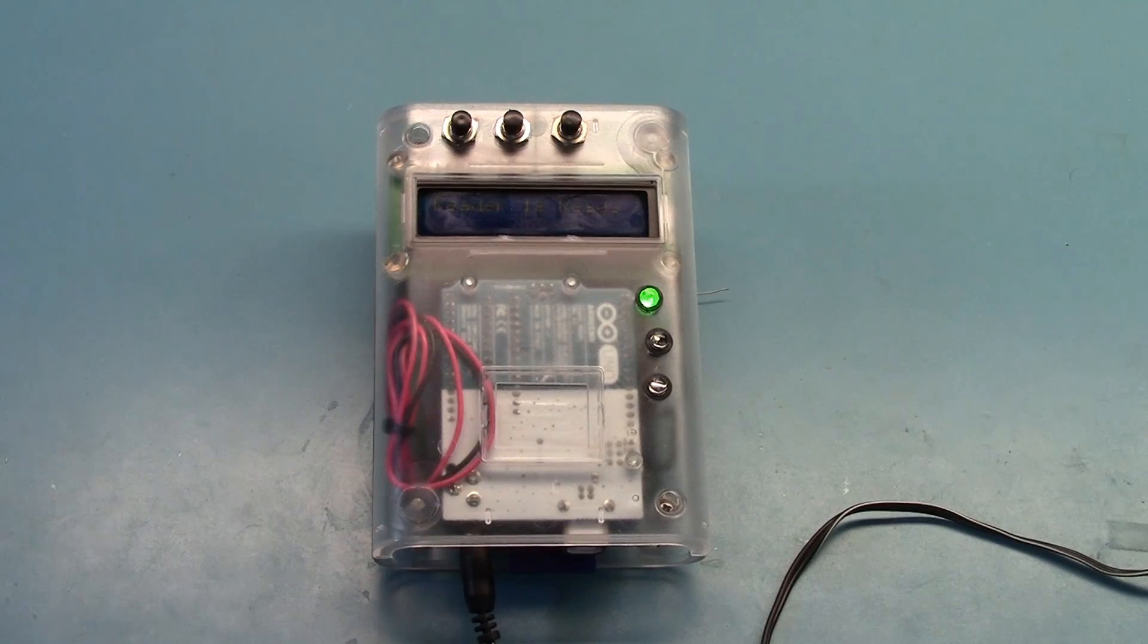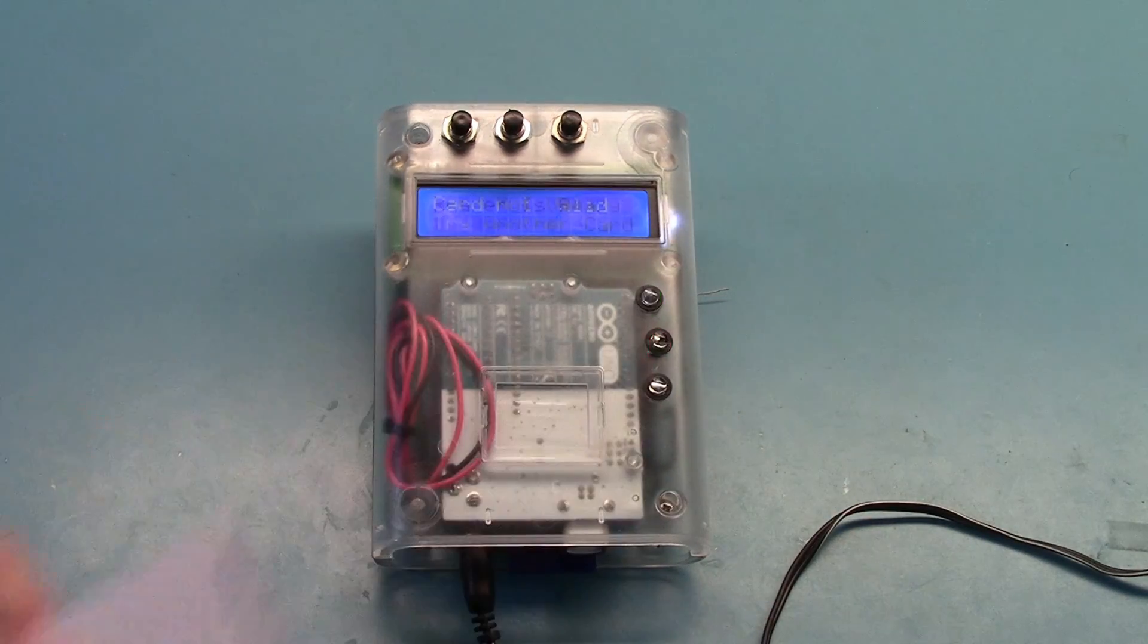And of course at this point the backlight's off. We still have a green indicator letting us know that we can swipe a card. We're going to swipe a card, card not valid, try another one.